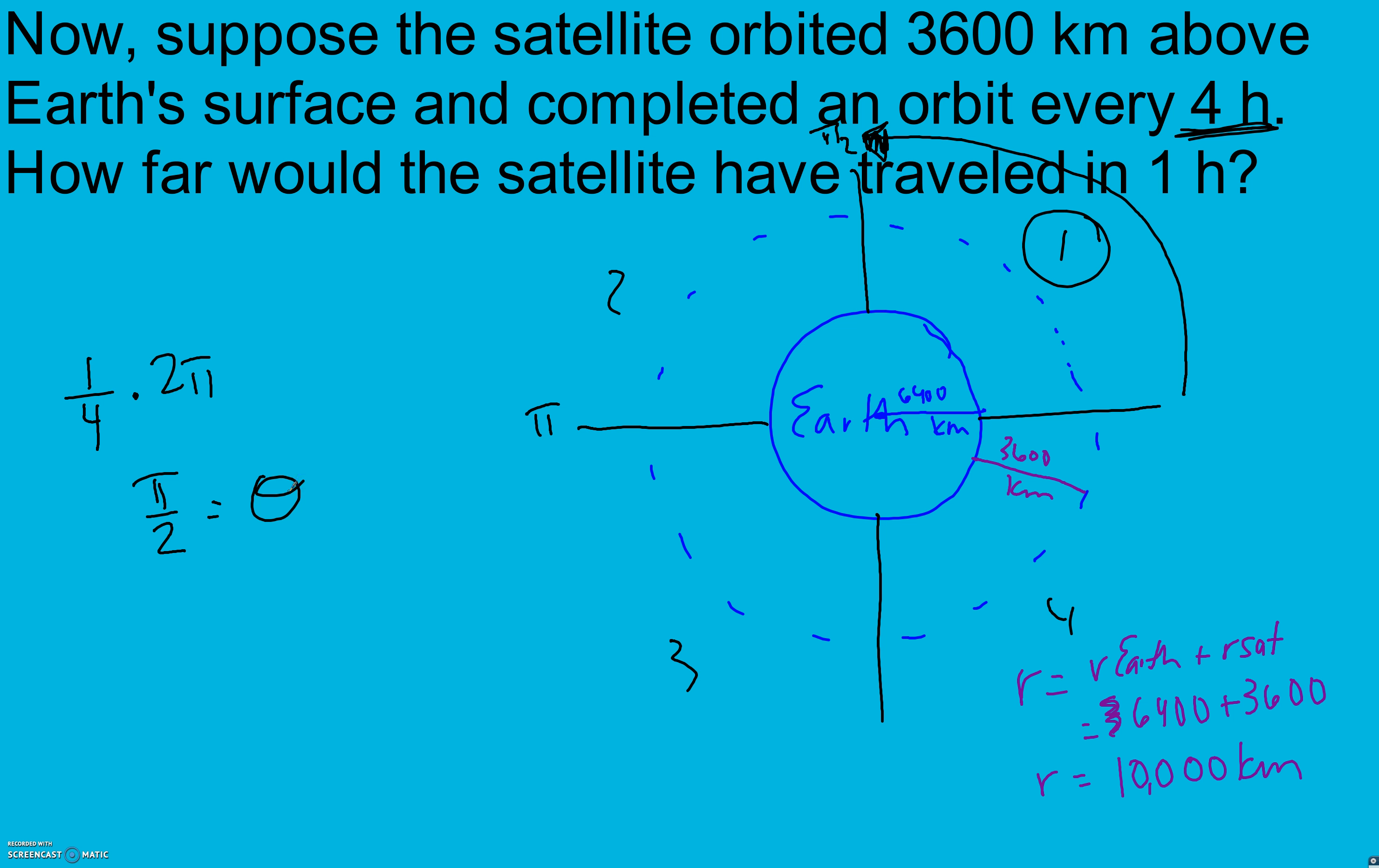90 degrees is π over 2. Arc length is our radius times our theta value, 5,000π, which is approximately 15,707.96 kilometers, or 15,708 kilometers. That's how far the satellite that's 3,600 kilometers above Earth's surface would travel in one hour if it completes an orbit around Earth every four hours.